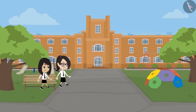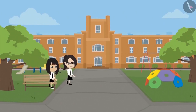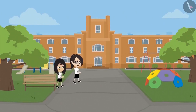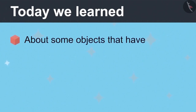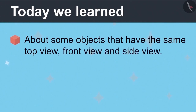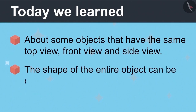Let's go. Lunch time is about to get over. Let's quickly eat our food. Neha and Vandana have now understood that there are some objects that look the same from all sides. That's why the top view, front view and the side view of those objects are the same. And the shape of the entire object can be determined from just three views.